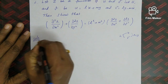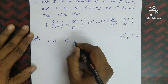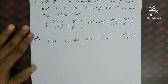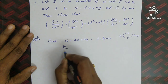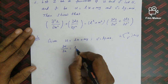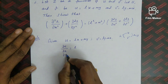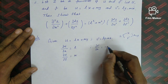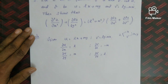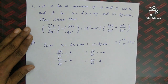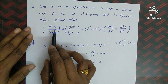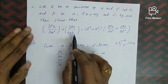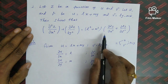Given u = lx + my and v = ly − mx. We compute the partial derivatives: ∂u/∂x = l, ∂u/∂y = m, ∂v/∂x = −m, and ∂v/∂y = l. The question requires ∂²z/∂x² and ∂²z/∂y², so we first find ∂z/∂x and ∂z/∂y, then differentiate again.